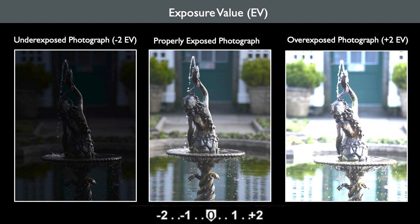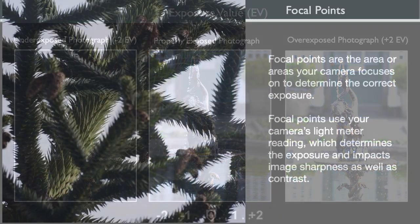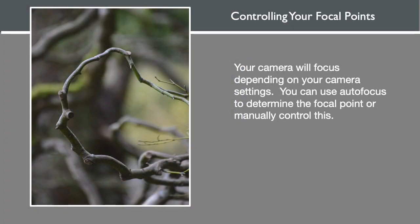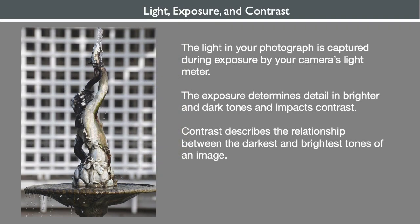Shadows are dark tones and highlights are bright tones. Focal points are the area or areas your camera focuses on to determine the correct exposure. Focal points use your camera's light meter reading, which determines the exposure and impacts image sharpness as well as contrast. Your camera will focus depending on your camera settings. The light in your photograph, along with the focal points captured during exposure by your camera's light meter, determines how much detail appears in the brighter and darker tones, and impacts contrast.